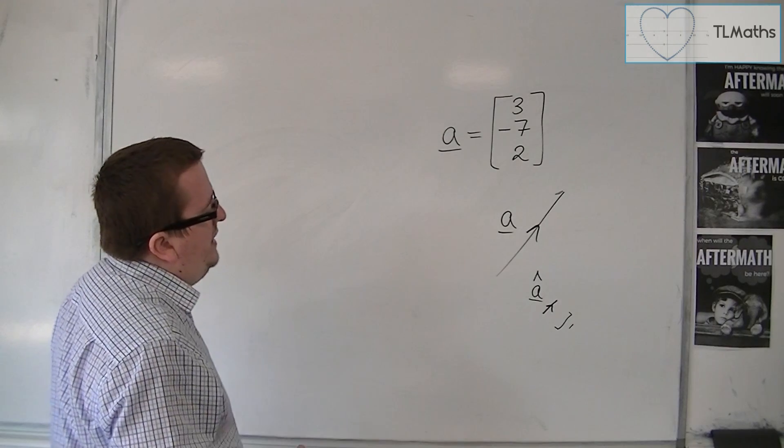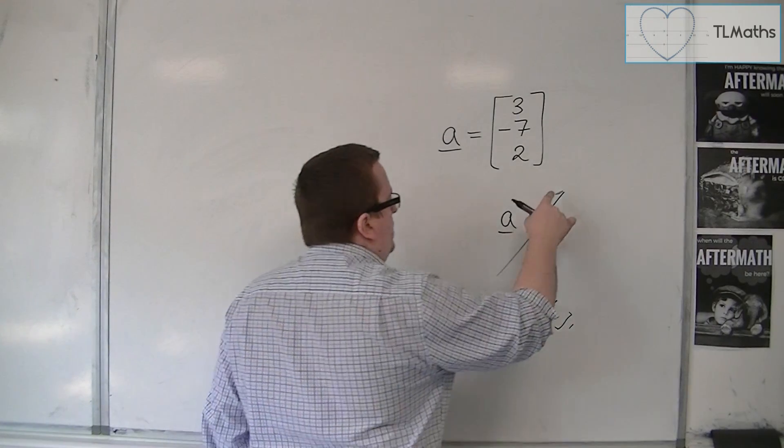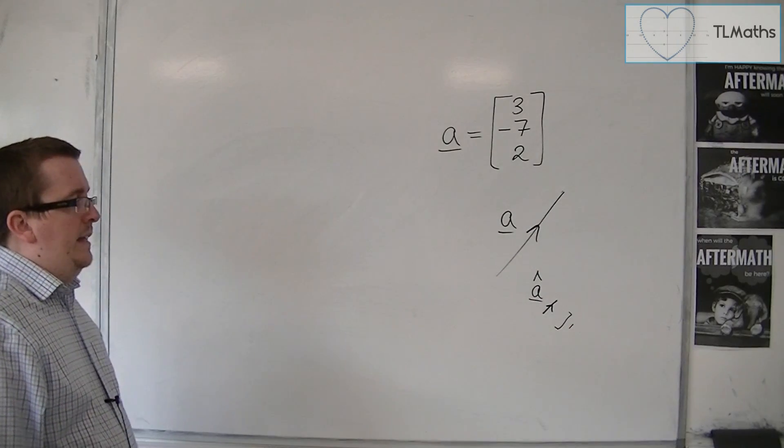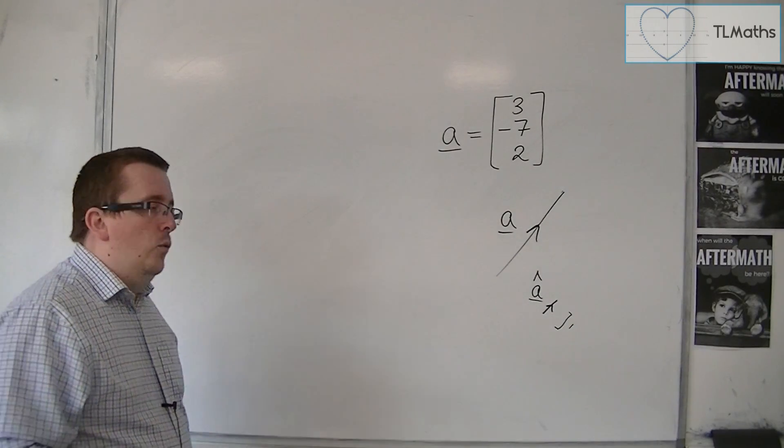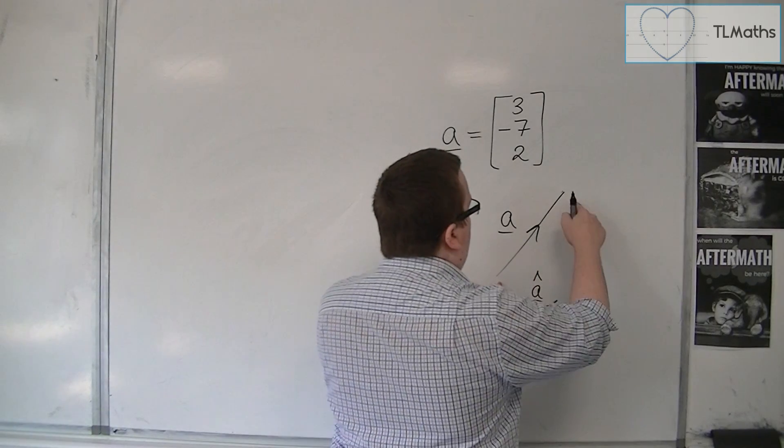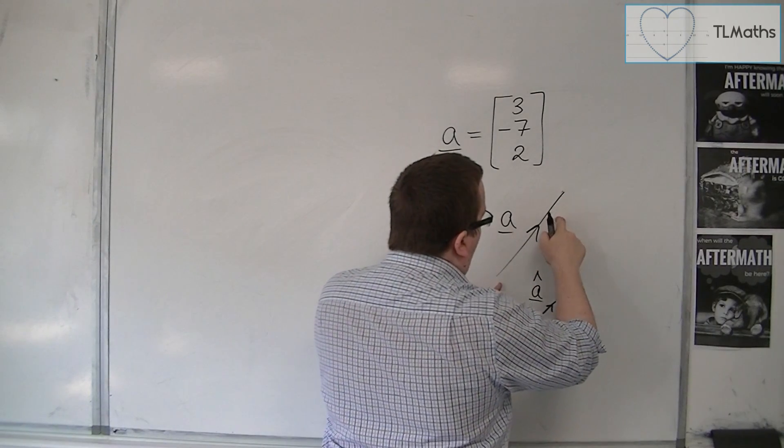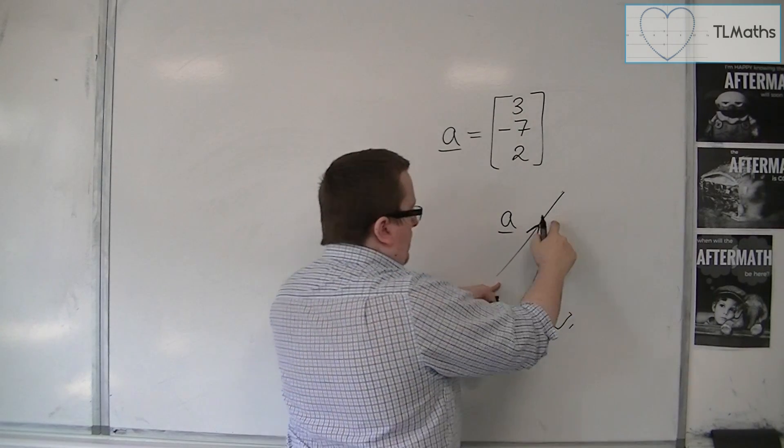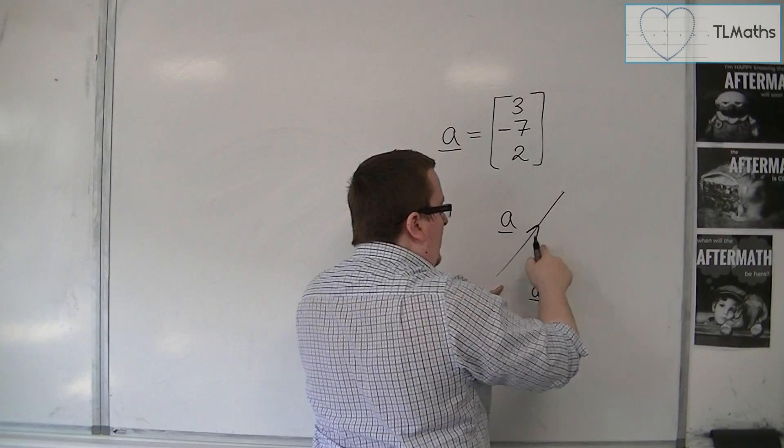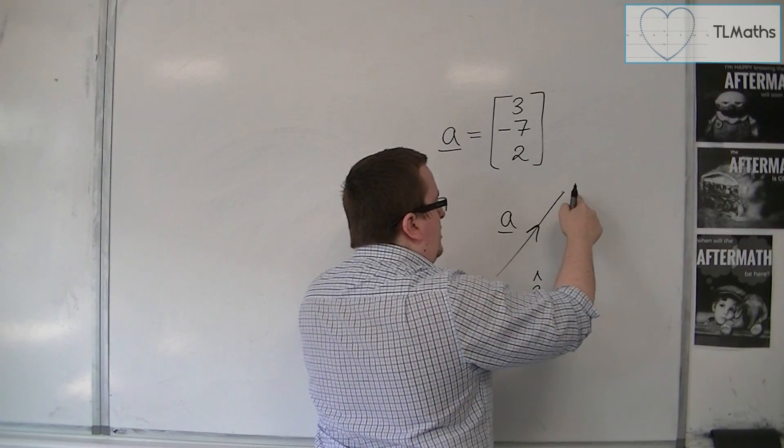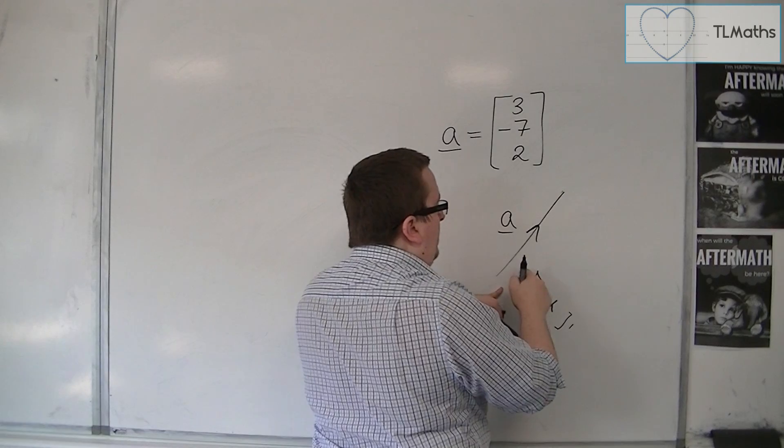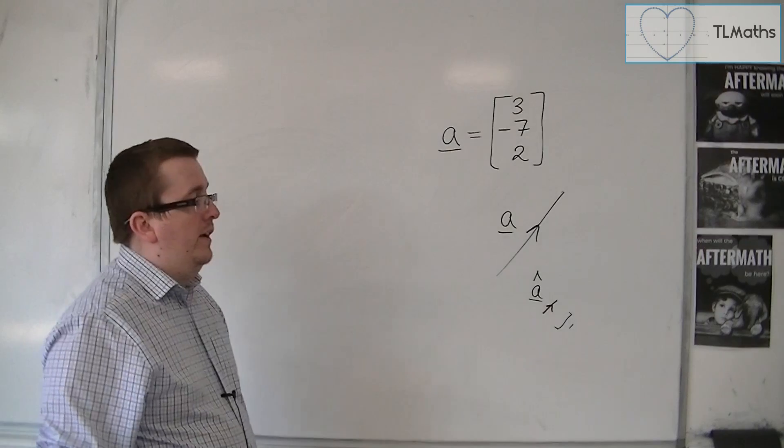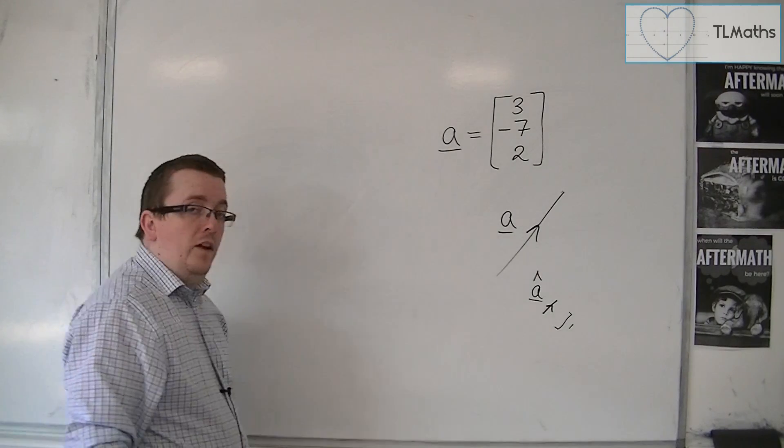So how can we do that? Well, what we could do is we could work out what the current length of A is, and then once we know how long A is, in order to get it of length 1, I can divide it up into the length of A. So if this was of length 8, for example, I could divide it up into 8 pieces, and one eighth of that length, of that vector, will be the one that I want.